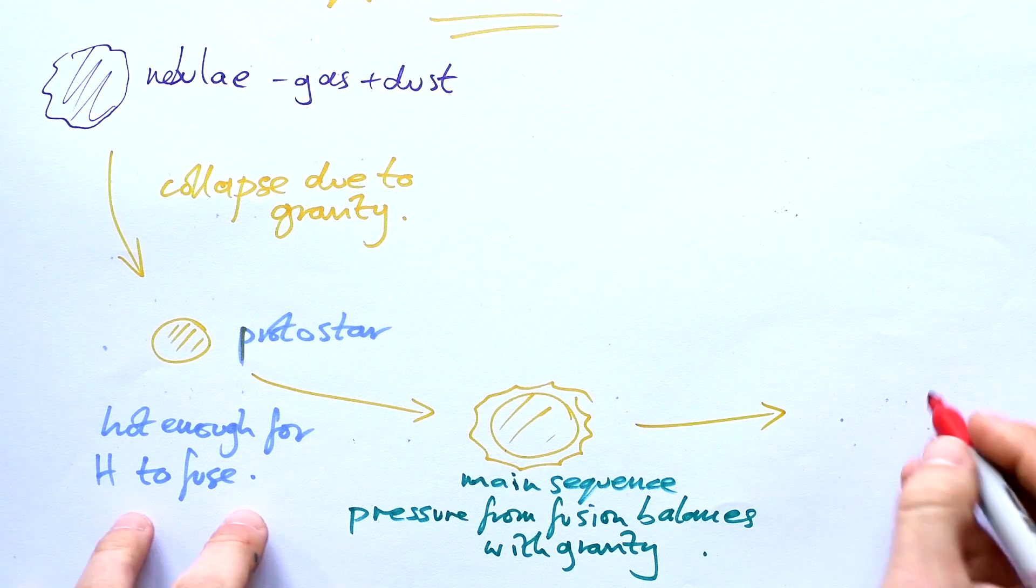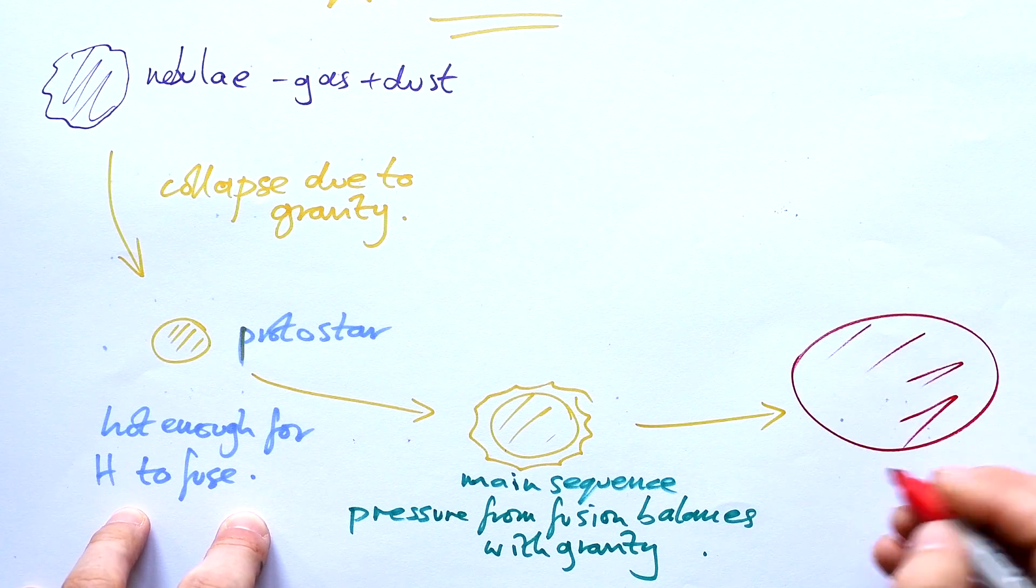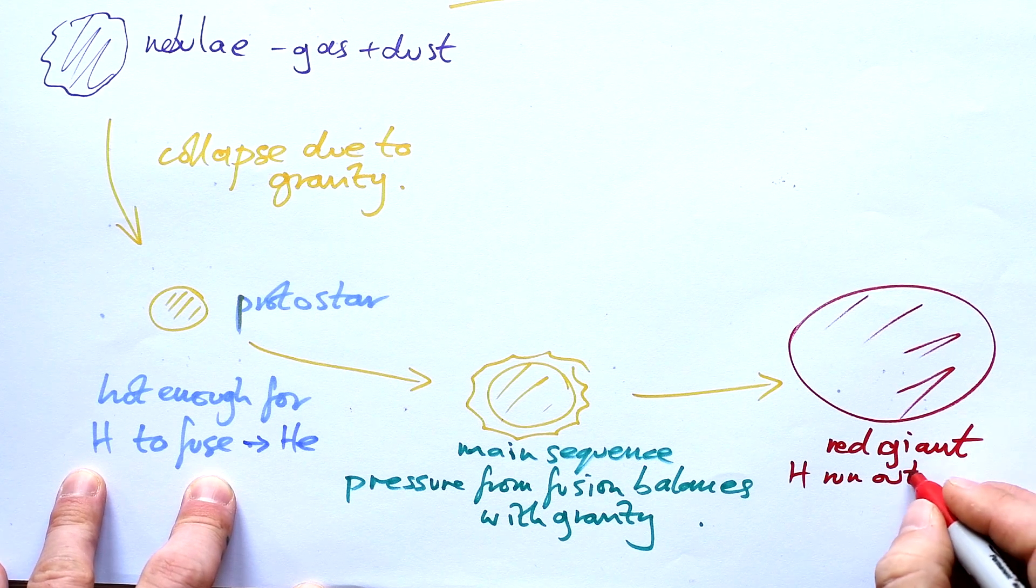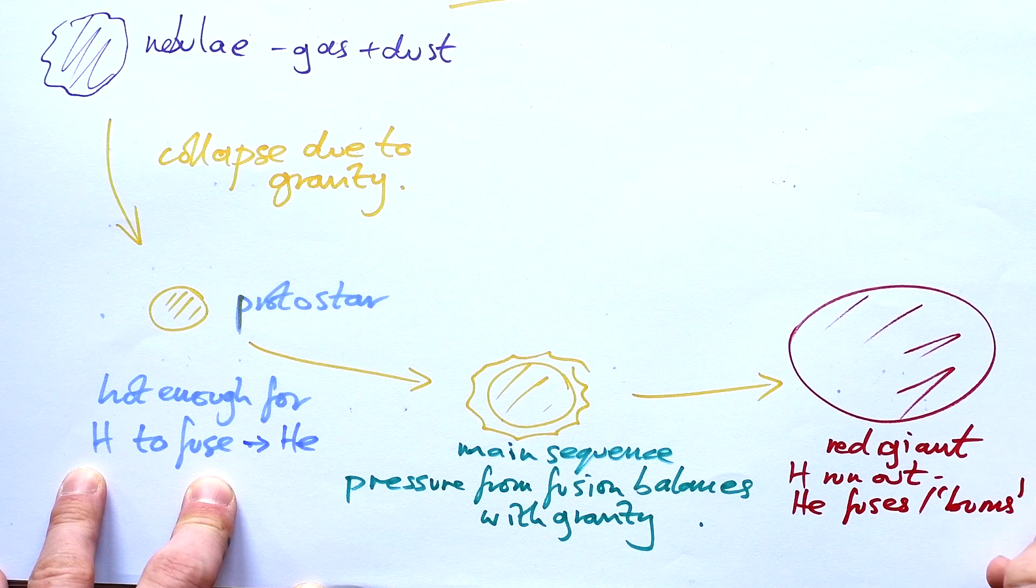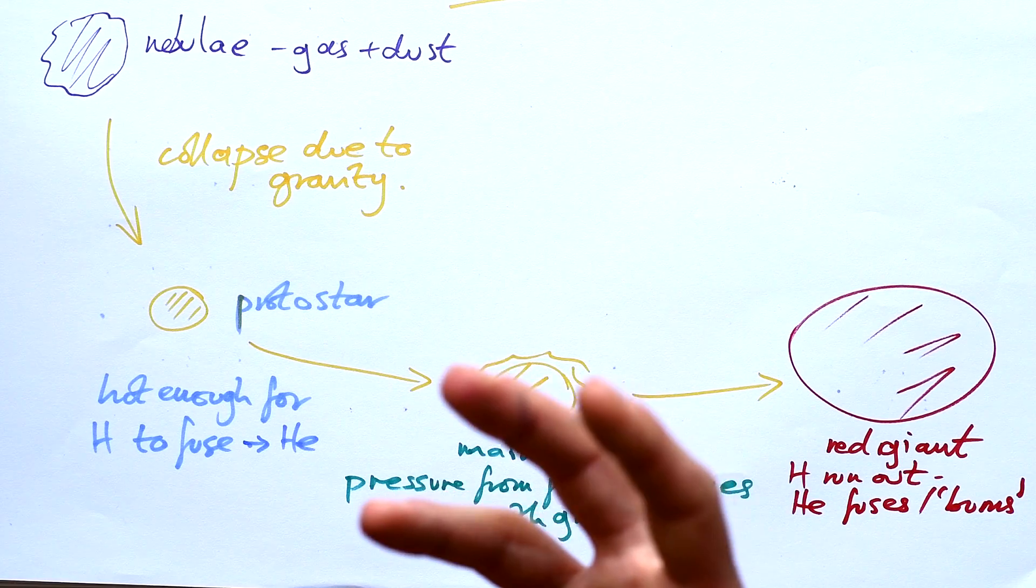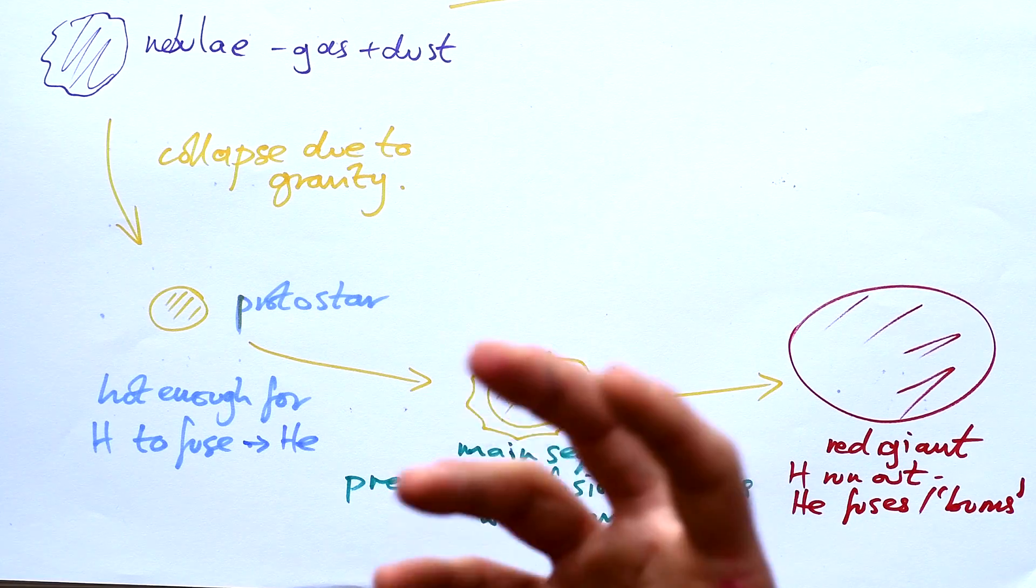Eventually though, all the hydrogen burns out and we end up with a red giant. The helium starts to fuse together as well, or we can say that it burns. It doesn't really burn, but that's what we say. Helium fusing releases a huge amount of energy.